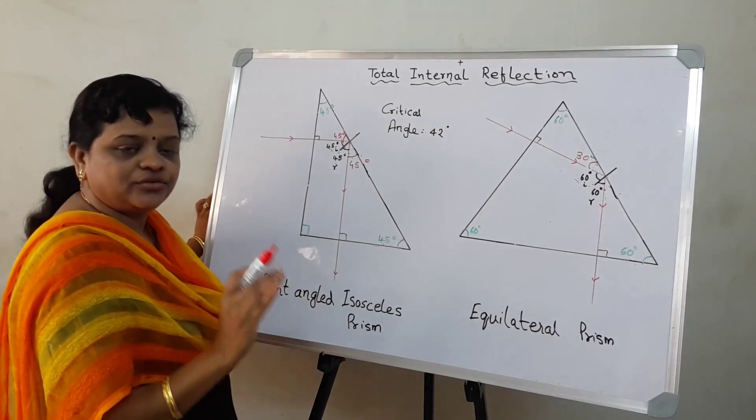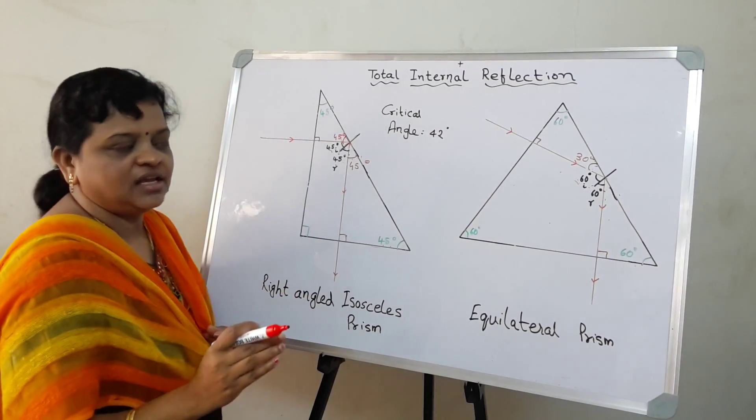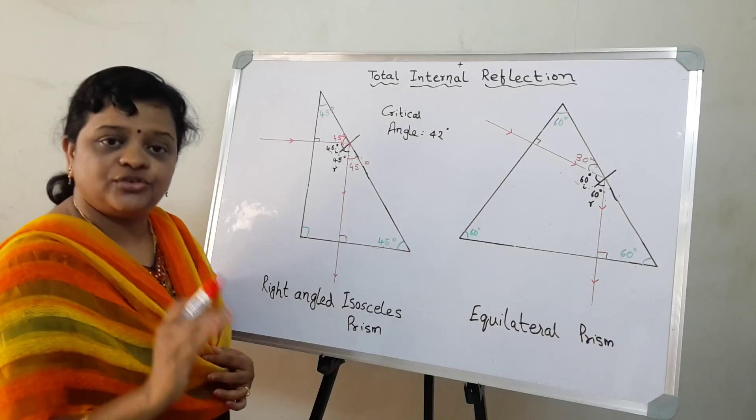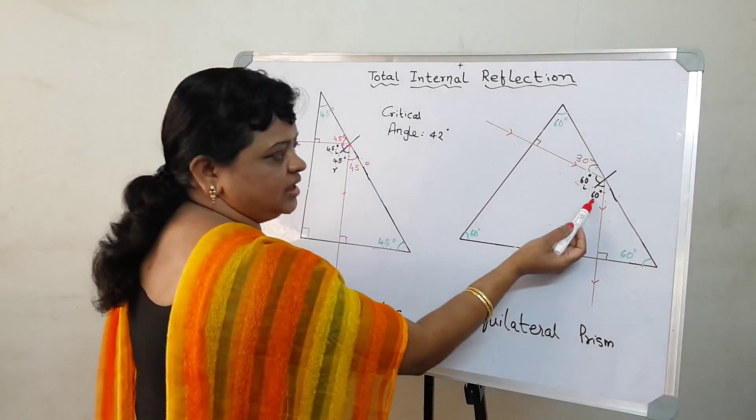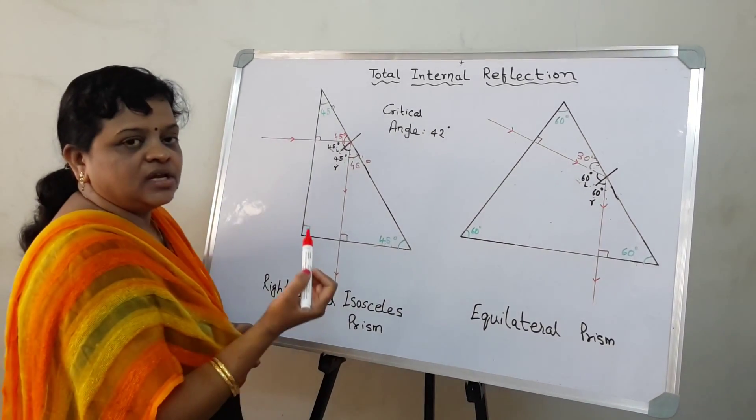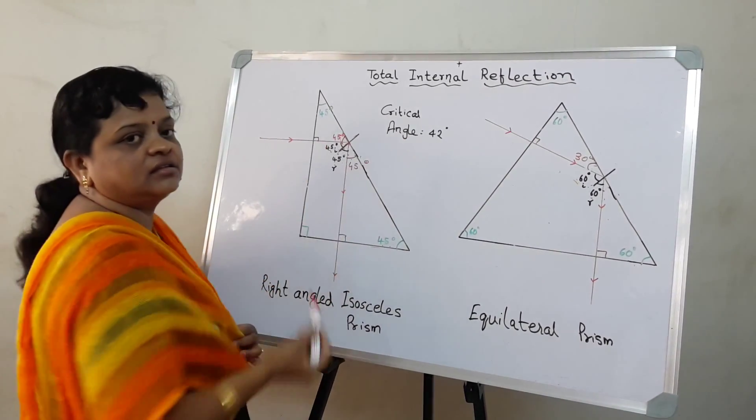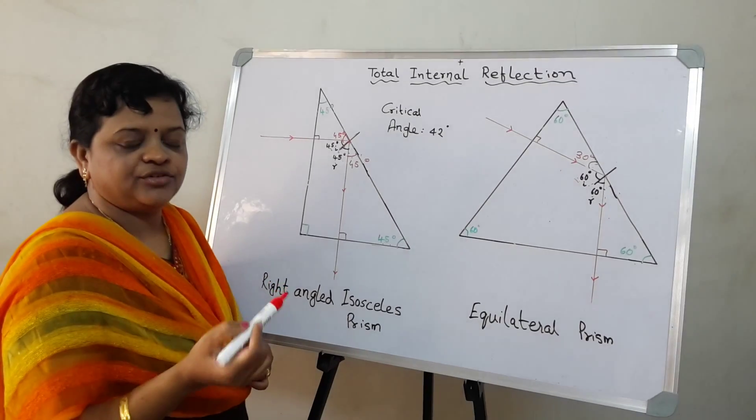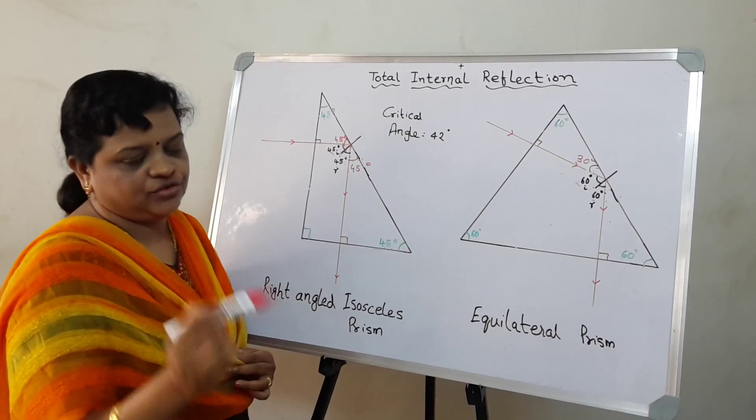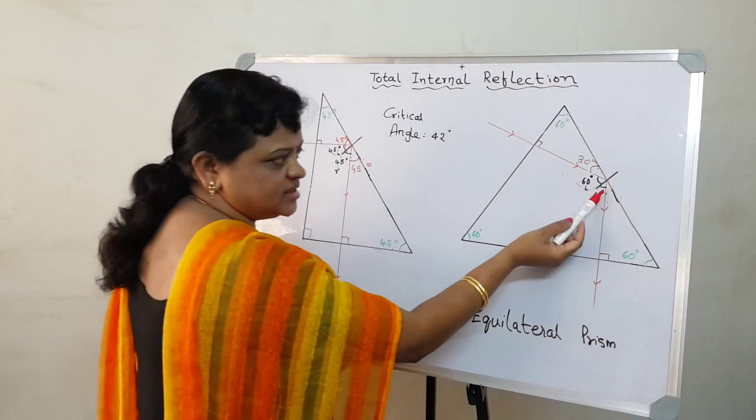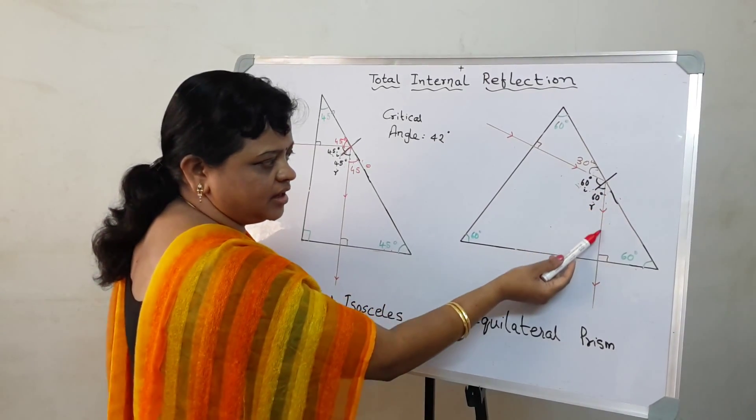And according to laws of reflection, angle of incidence is always equal to angle of reflection. So you have 60 again. And now, since the angle of incidence is 60, which is greater than the critical angle 42, hence it suffers total internal reflection. So you can see here very clearly, comes right down.